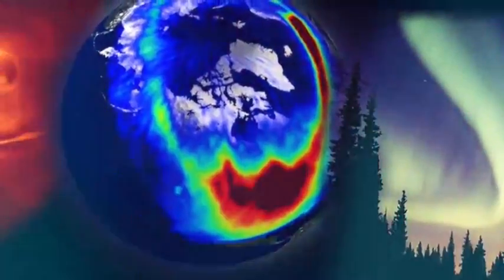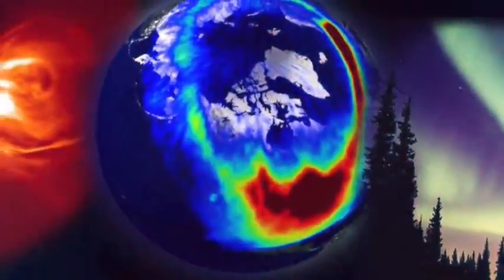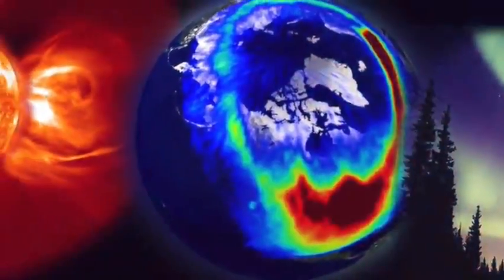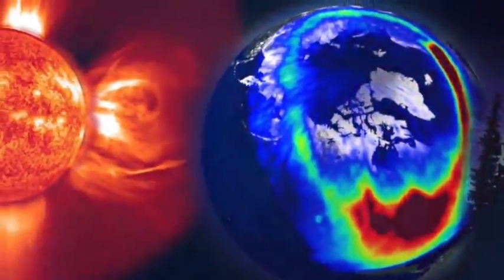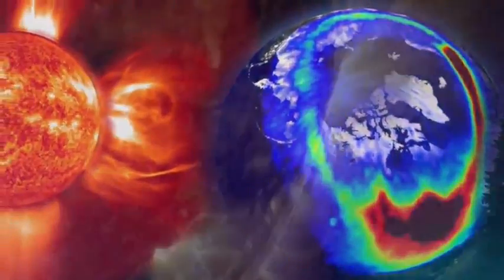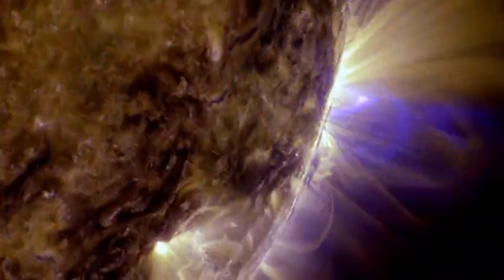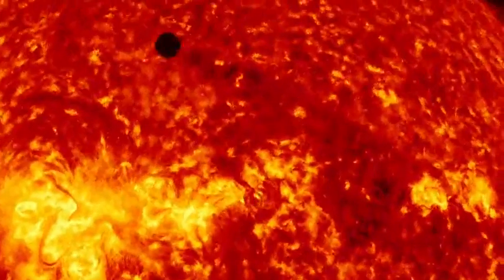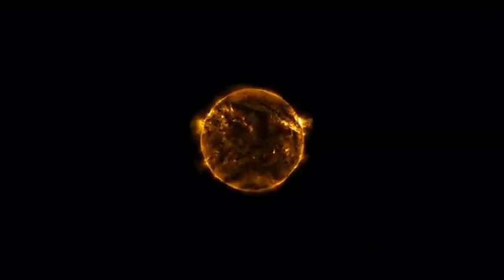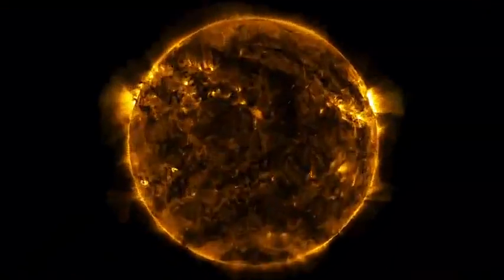We are surrounded by plasma, starting from the ionosphere 100 km above us, which is connected to the Sun via the plasma of the solar wind. The very tenuous interstellar space is a plasma, and so are the largest objects that emit X-rays. Our life is energized by plasmas.